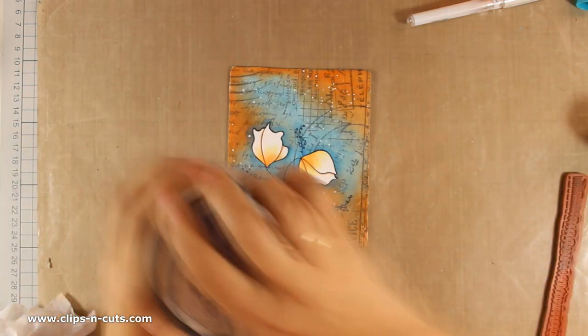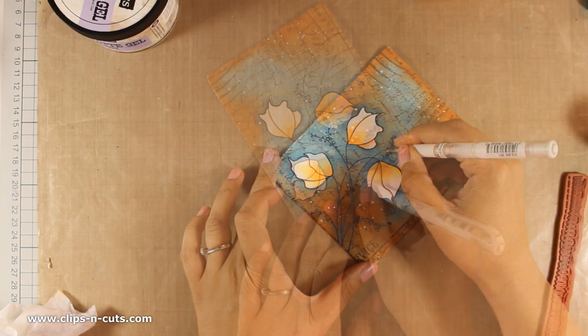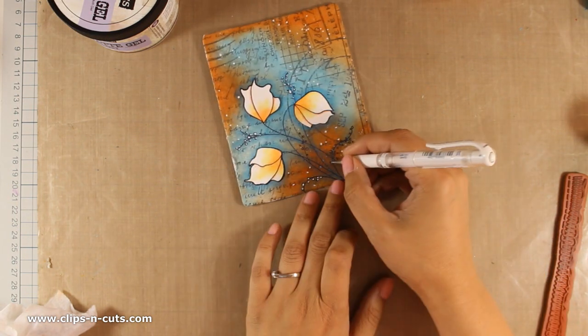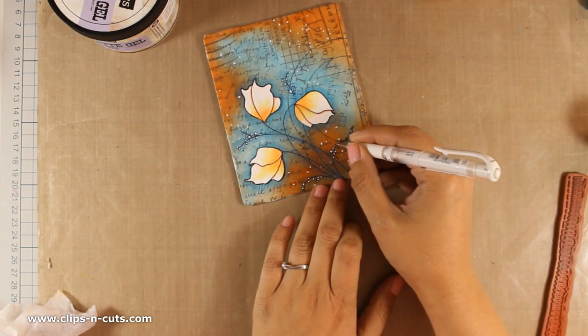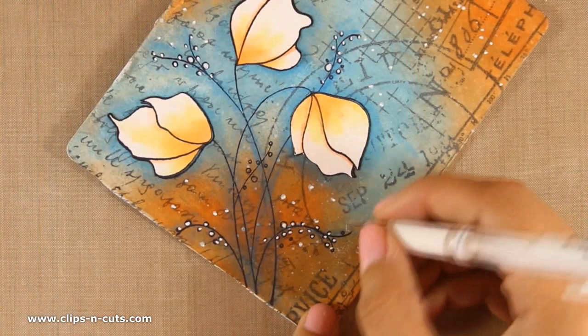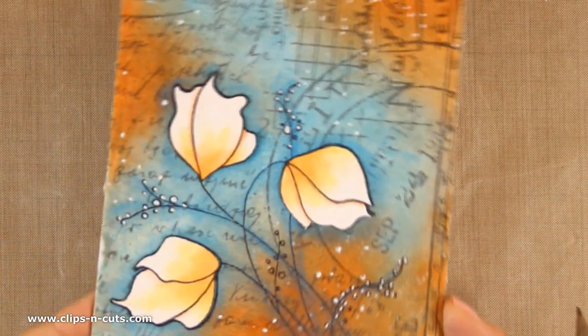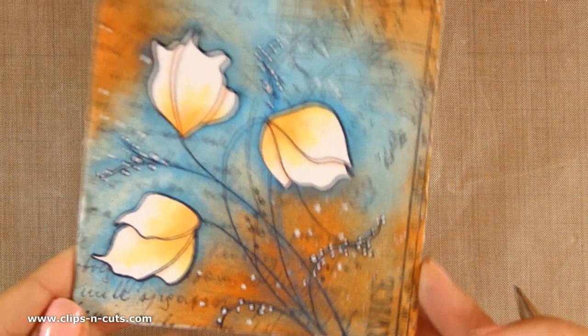I am going to use my white gel pen and add a few dots on the stems. I am going to zoom in for you so you can see exactly what I am doing. Adding those white dots really brightens the page and brings everything together with the background.